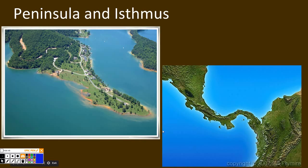A peninsula and isthmus are formed in the same way, usually by volcanic eruption or plate movement. These are both destructive forces. However, they are shaped by water, weathering, and erosion as waves crash into their shores.